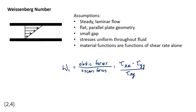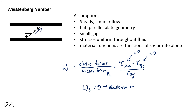As an example: for a Newtonian fluid, the normal stress tensors both equal zero, so the Weissenberg number equals zero. This makes sense because for a Newtonian fluid, the viscous forces are overwhelming and control the flow, giving a linear velocity profile. Whereas for a polymer solution, like what we saw for the Weissenberg effect, you have a viscoelastic fluid where elastic forces are also impacting the flow.